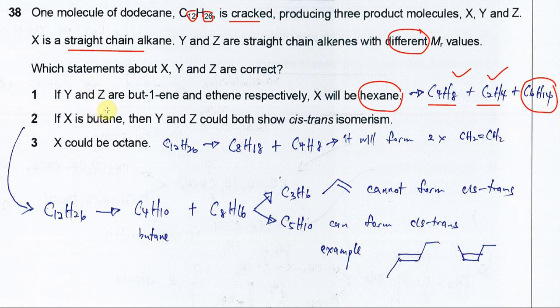Second statement: if X is butane, then Y and Z could both show cis-trans. This statement is wrong. If X is butane, the remaining C and H is 12 minus 4, 26 minus 10, so the remaining is C8H16.